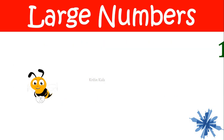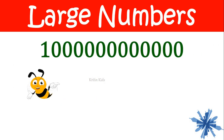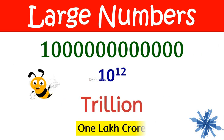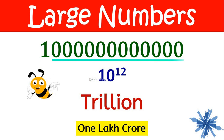Then if I add one more zero, it becomes trillion, which is also called as one lakh crore. That is one followed by twelve zeros is one trillion.